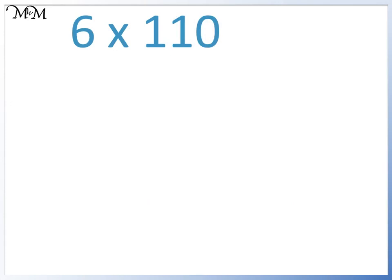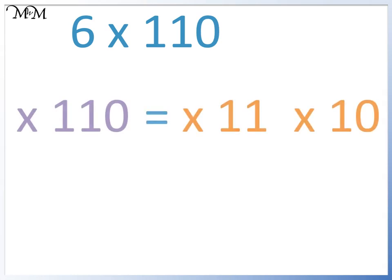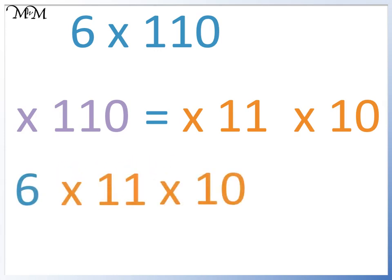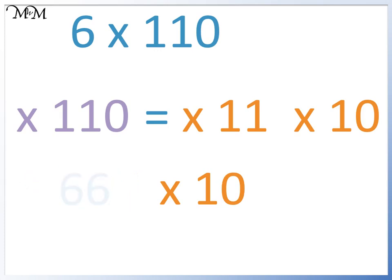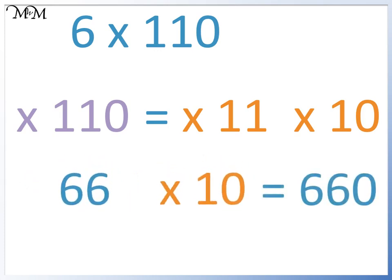Here we have 6 times 110. Multiplying by 110 is the same as multiplying by 11 and then by 10, because 11 times 10 equals 110. So we can change 6 times 110 to 6 times 11 times 10. We'll multiply by 11 and then by 10. 6 times 11 equals 66, and 66 times 10 equals 660. So 6 times 110 equals 660.